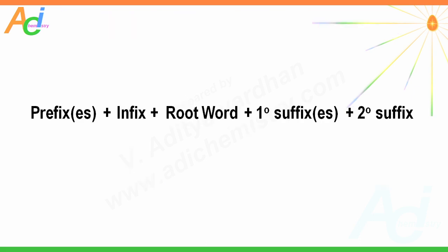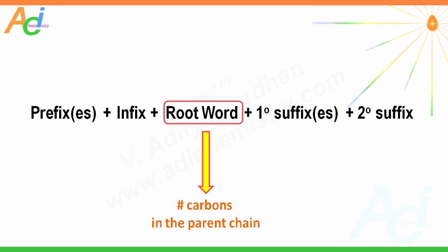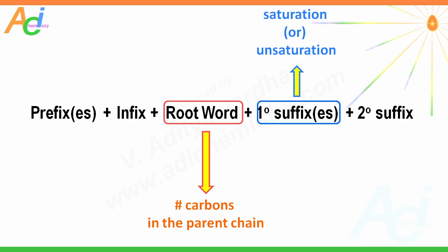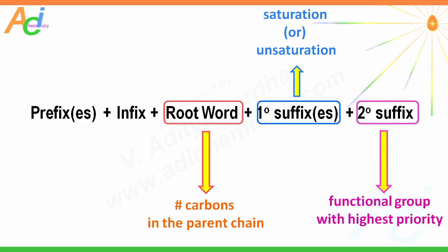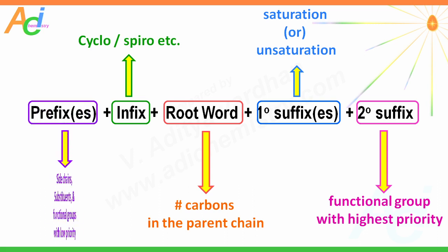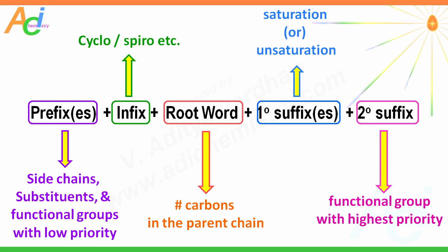The root word indicates the number of carbon atoms in the parent chain, while the primary suffix or suffixes denote saturation or unsaturation in the parent chain. The secondary suffix indicates the functional group with the highest priority, whereas the infix indicates the cyclic or spiral nature of the molecule, and prefix or prefixes are used to denote side chains, substituents, and functional groups with low priority.